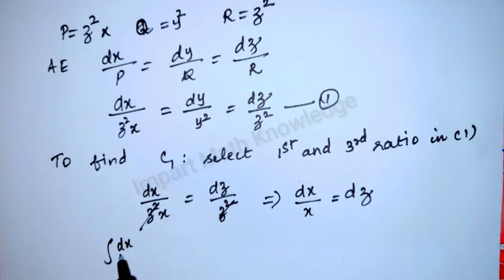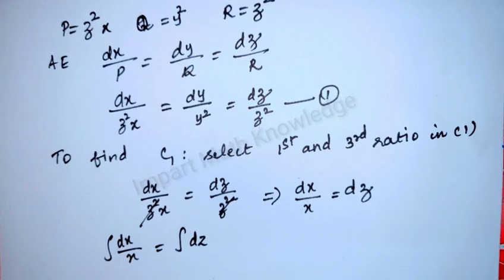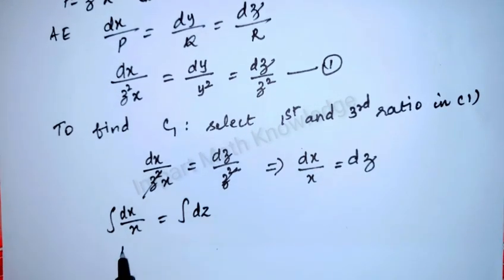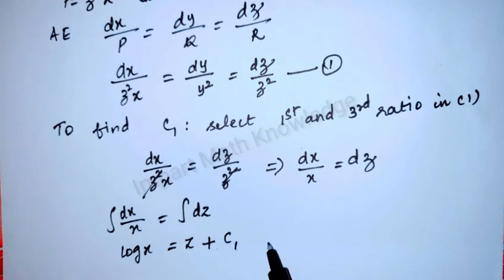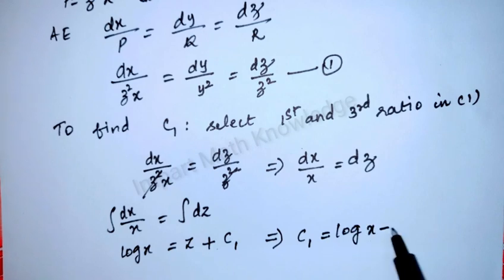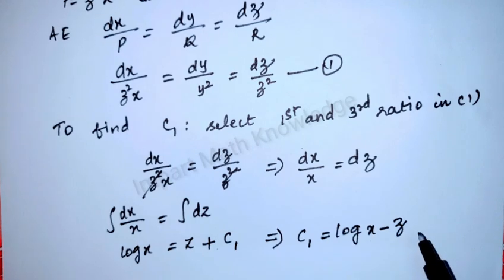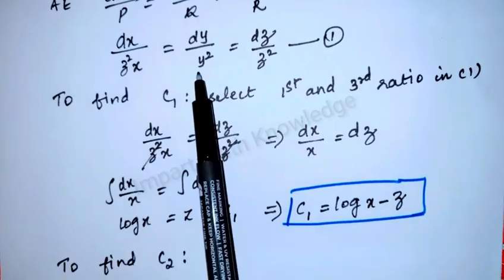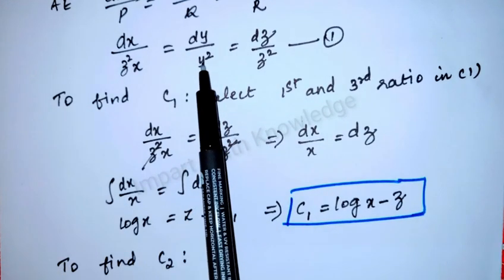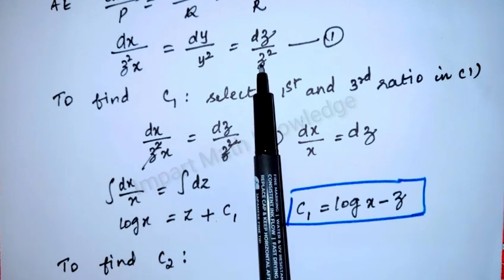Integrating: the integral of dx/x = integral of dz. We know that the integral of 1/x dx is log x, and the integral of dz is z plus constant. So log x = z + c1, giving c1 = log x − z.